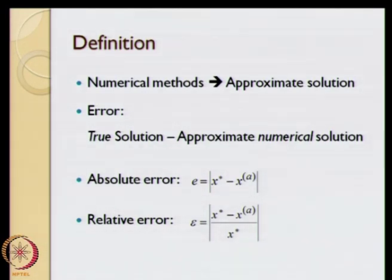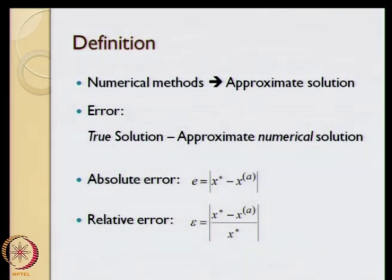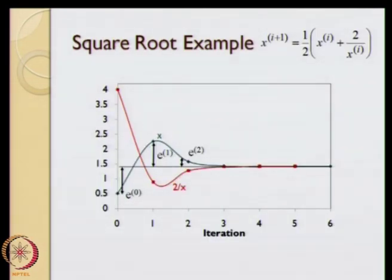Often, what is important is not just the absolute value of the error, but the value of the error relative to the true value of the solution. That is what is known as the relative error. The relative error is defined as the absolute value of the difference between the true value and the approximate value, divided by the true value. The reason for doing this is because an error of 0.1 is very large if the true value is 0.2, but it is negligibly small if the true value is 1000.